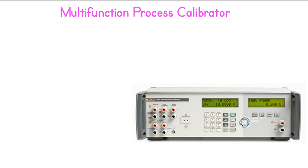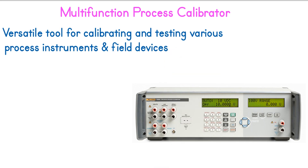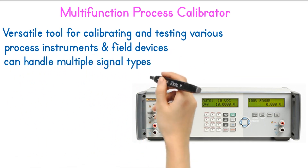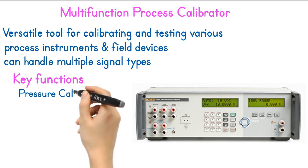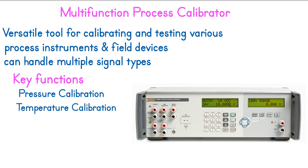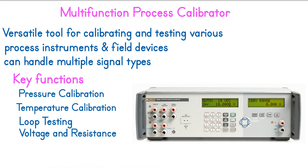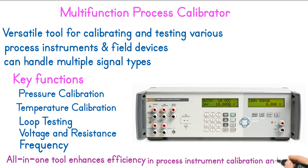Multifunction Process Calibrator. A multifunction process calibrator is a versatile tool for calibrating and testing various process instruments and field devices in industrial environments. It can handle multiple signal types, enabling technicians to verify and adjust instruments using one device. Key functions include: Pressure Calibration — calibrates pressure transmitters and gauges; Temperature Calibration — suitable for RTDs and thermocouples; Loop Testing — tests 4 to 20 mA current loops; Voltage and Resistance — measures and sources electrical signals for transmitters and control systems; and Frequency — some models can generate and measure frequencies. This all-in-one tool enhances efficiency in process instrument calibration and testing, supporting critical industrial applications.